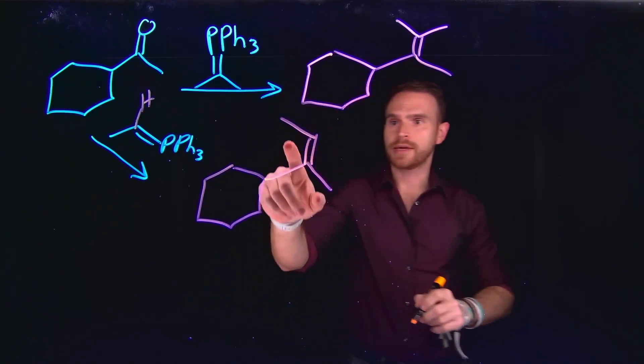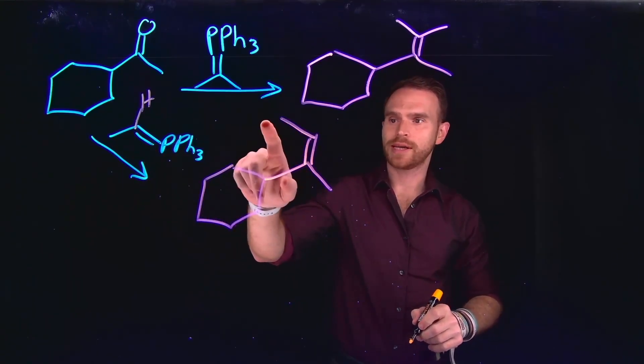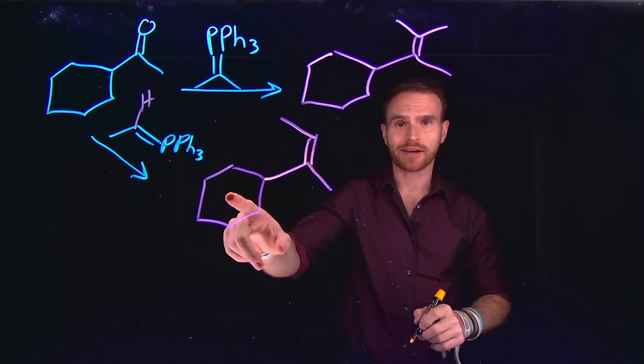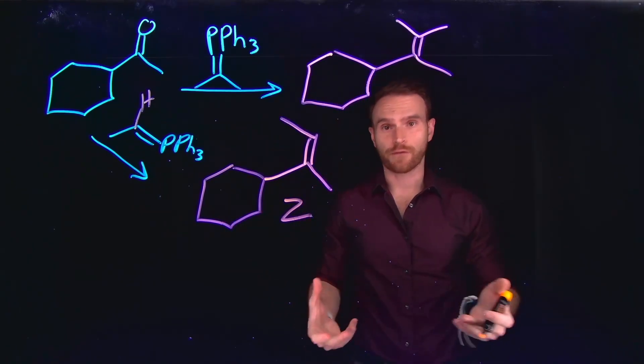So therefore, the alkyl group, which is coming off the methyl group, is going to be pointed in the same direction as the largest substituent, which is the cyclohexane ring. So this would be the Z isomer, and these would be the products of the first reaction.